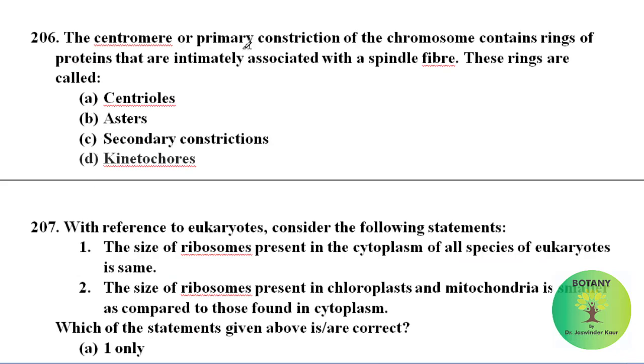The centromere or primary constriction of the chromosome contains rings of proteins that are intimately associated with spindle fibres.